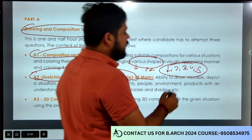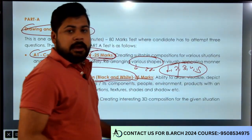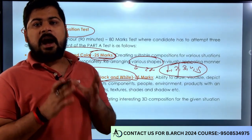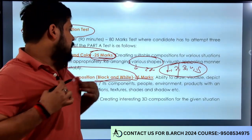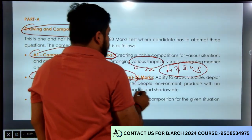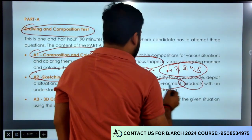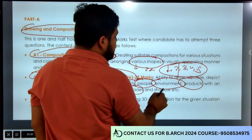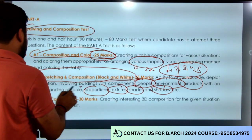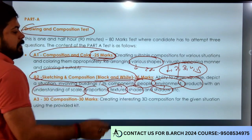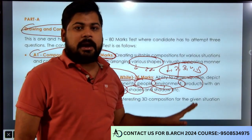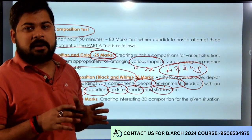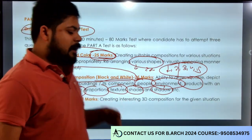NATA में कोई end नहीं है - सिर्फ 2.5 point तक ही नहीं, 3, 4, 5 point - किसी भी point से आपसे question कर सकता है, आपको उसके लिए ready रहना पड़ेगा। इसमें आपको people, environment, product - इन सब चीजों का texture, setting, shadow formation, scale और proportion समझ के आपको perspective drawing create करनी होगी question number 2 में, जो कि आपके 25 नंबर का होने वाला है। Syllabus भी मैं आपको दिखा दूंगा।